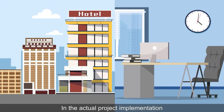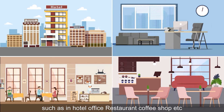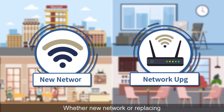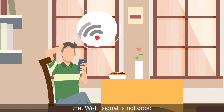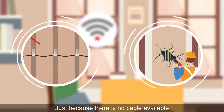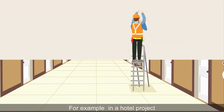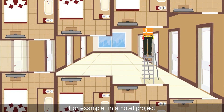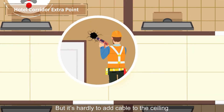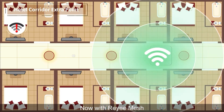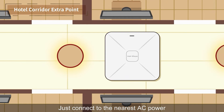In actual project implementations such as in hotels, offices, restaurants, and coffee shops — whether new network installations or replacements — there are often areas where the Wi-Fi signal is poor just because no cable is available. New wiring is very troublesome. For example, in a hotel project where signal in the last room is not good, it's difficult to add cable to the ceiling. Now with Reyee Mesh, you can extend Wi-Fi without cable.